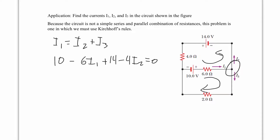In the second loop, starting at the same point and going through the other path: we get 10 minus 6I1 minus 2I3 equals 0.